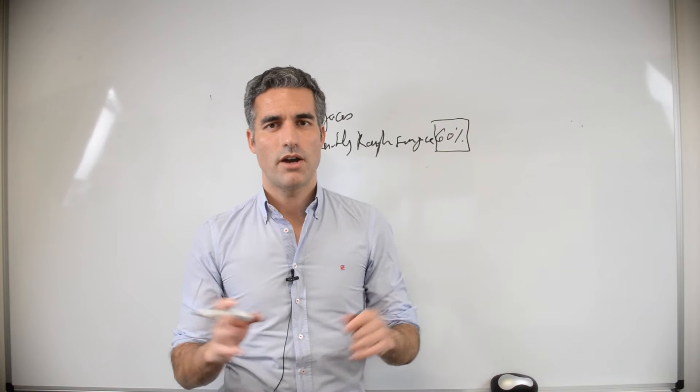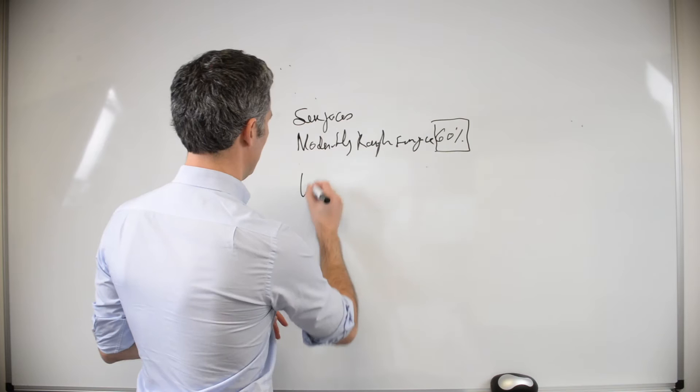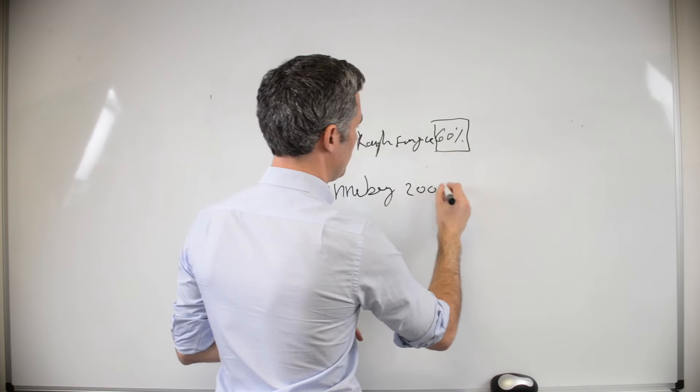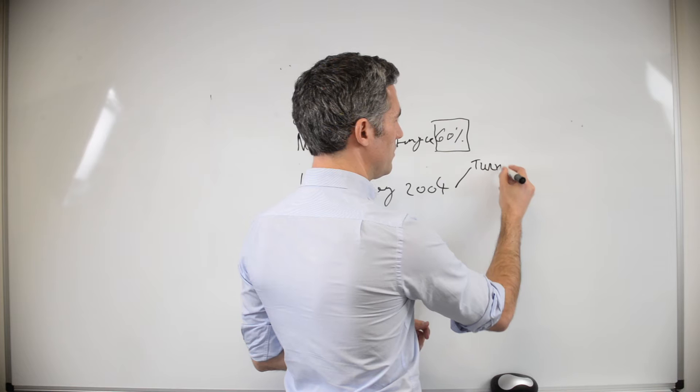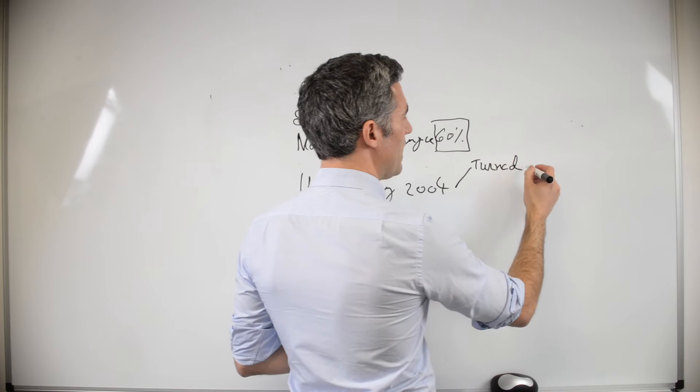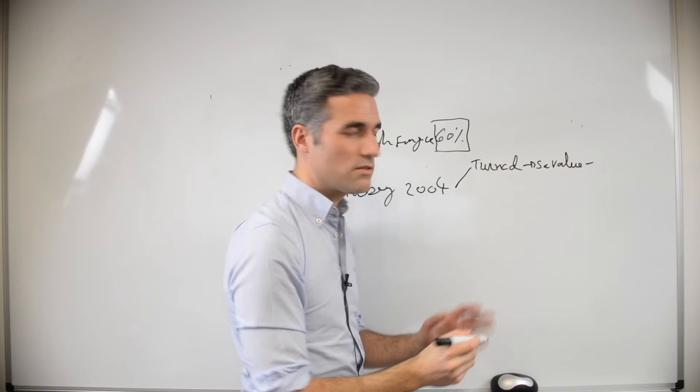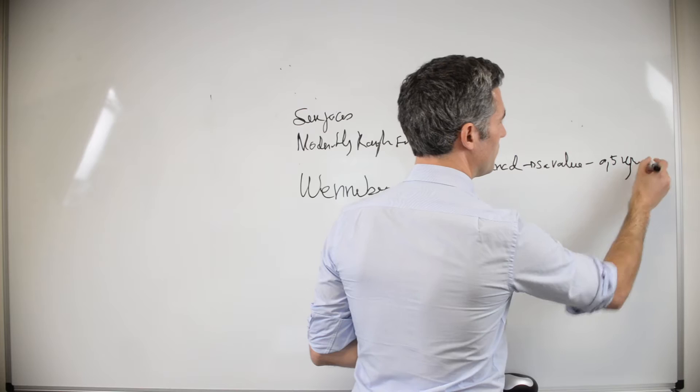Why a good surface? What are the properties of a good surface? I would like to start with a classification from Wennerberg back in the year 2004. In this classification, she divided in four kinds of surface. The first one would be the turned surface, which was the original for Branemark, which has an SA value below 0.5 microns.